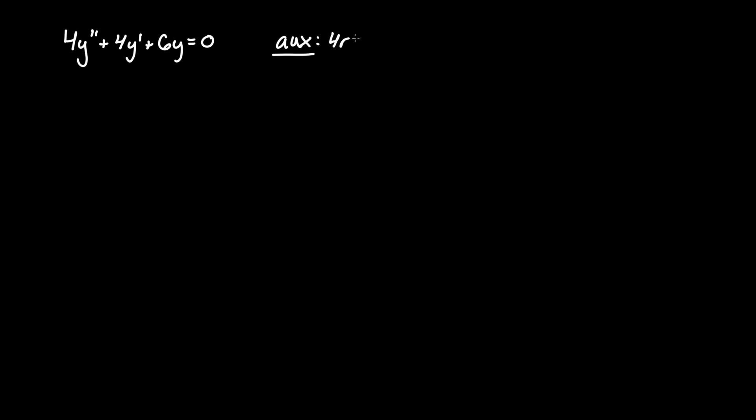So we keep the coefficients the same, so 4r², 2 for double prime, plus 4r, 1r for 1 prime, plus 6, no r for no prime, equals 0.